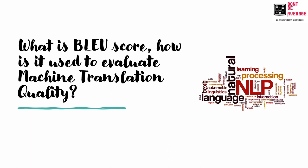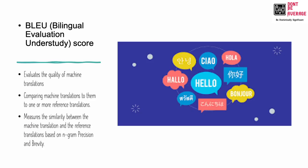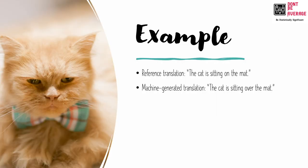The full form of BLEU is Bilingual Evaluation Understudy score. BLEU measures the similarity between the machine translation and the reference translation based on n-gram precision and brevity penalty.